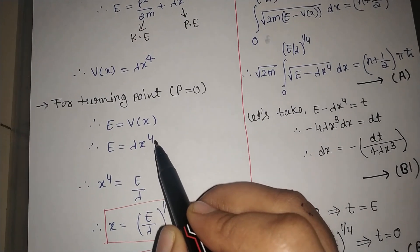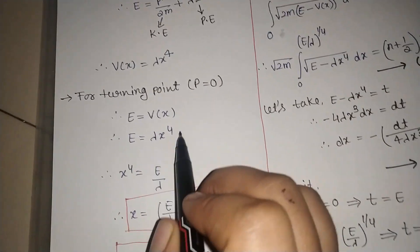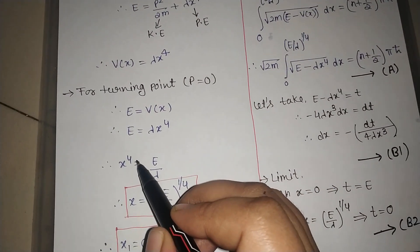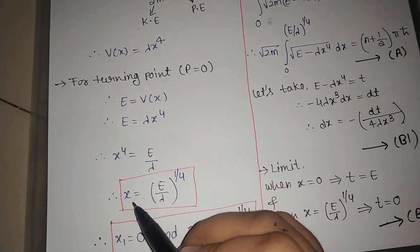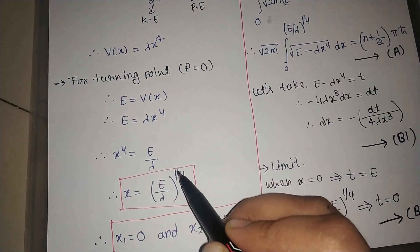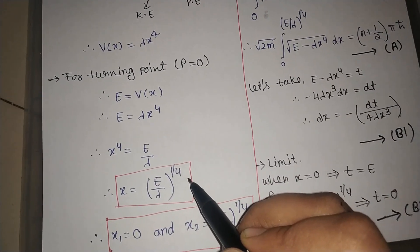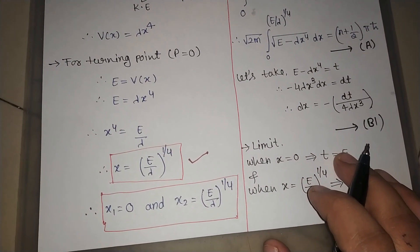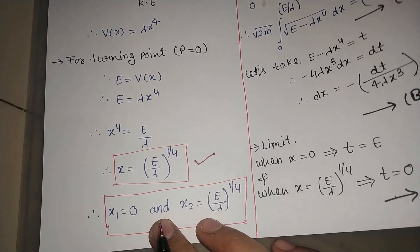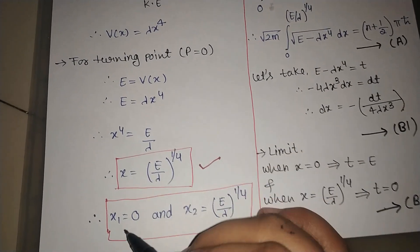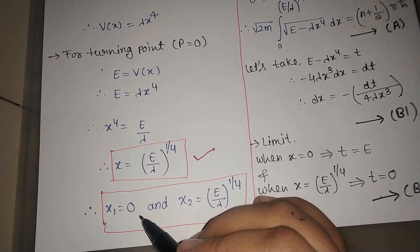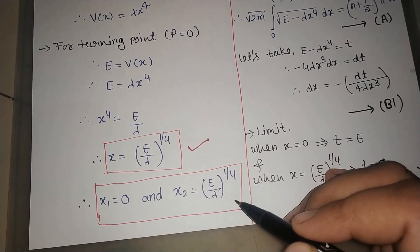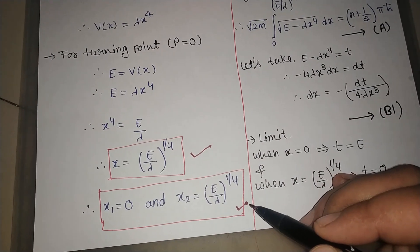From E = λx⁴ we can find the value of x. So x⁴ = E/λ, which gives x = (E/λ)^(1/4). We get two turning points: the lower one x₁ = 0 and the upper one x₂ = (E/λ)^(1/4).